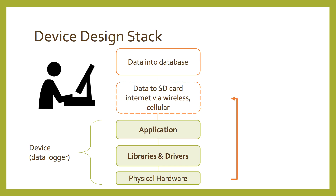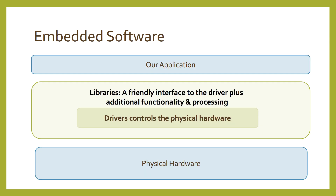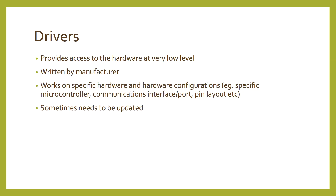We're going to look at three different kinds of software, but we'll only be writing one kind, which is the application. So let's look at the driver. The driver controls the physical hardware. The library includes the driver and adds some functionality and other processing, and it sits between the application and the physical hardware. The application interfaces with the library and tells it what to do. We're going to be writing the application, but let's look at the drivers just a little bit more.